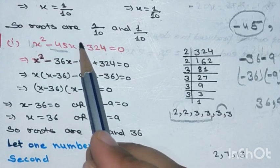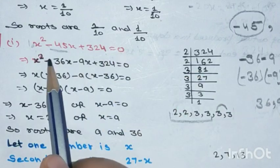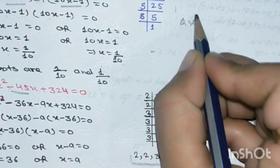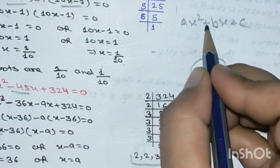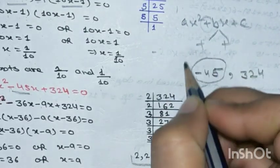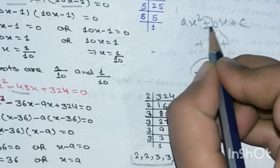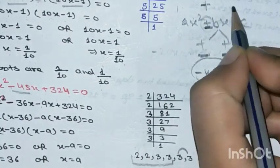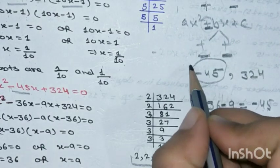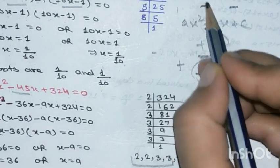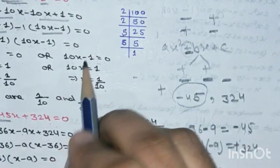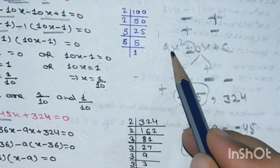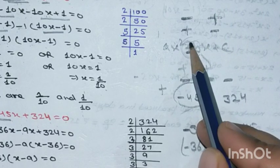Rules for factorization signs: if ax² + bx + c has all plus signs, both factors are positive. If b is negative and c is positive (ax² - bx + c), both factors are negative. If b is positive and c is negative, one factor is positive and one is negative. If b is negative and c is negative, one factor is positive and one is negative.